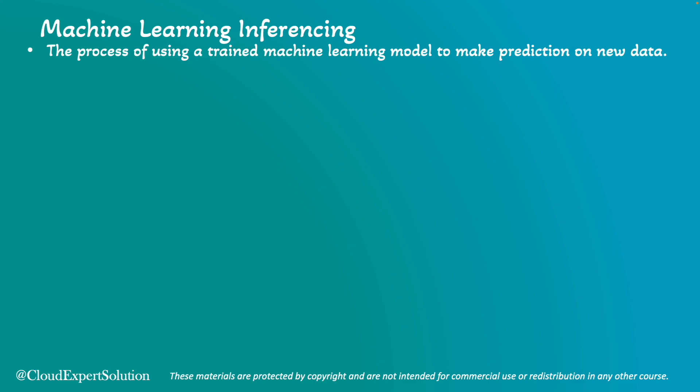Machine Learning Inferencing is the process of using a trained machine learning model to make predictions on new data. That means you already have a trained model and you are feeding new or incoming data to get the prediction. In this module, we will focus on inferencing speed. Let's dive in and discover how these techniques can transform data into actionable insights.